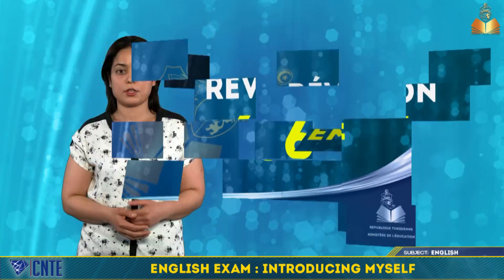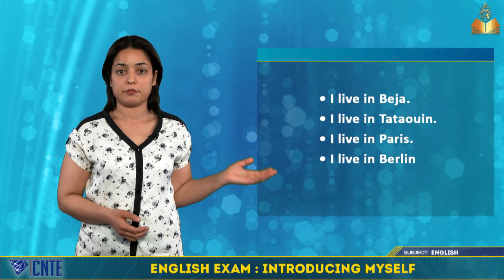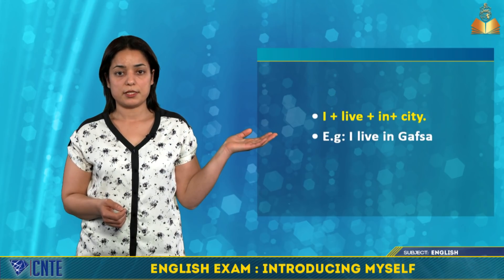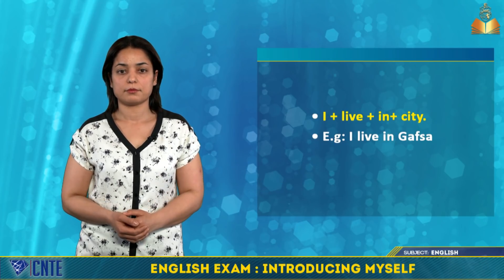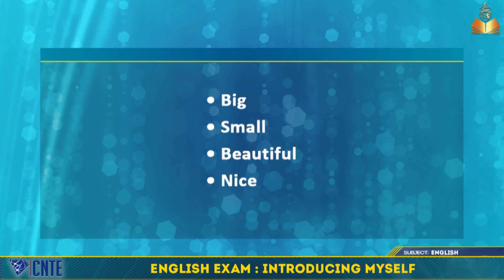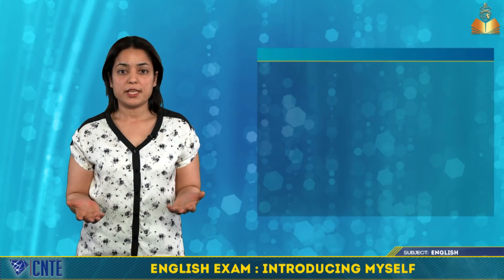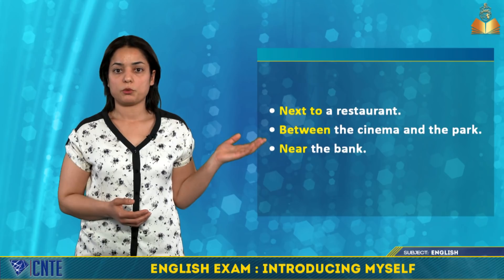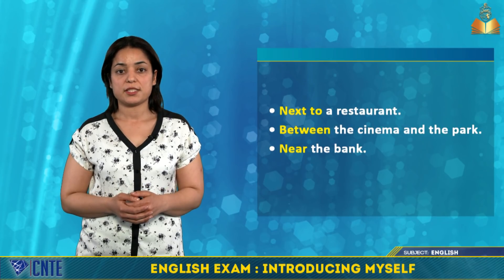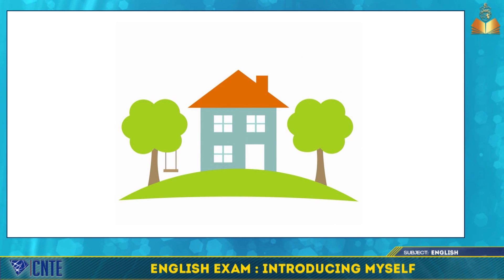You can also say where you live. For example: I live in Beja, I live in Tunis, I live in Paris. The rule is: I + live + in + city. You can describe your house — it can be big, small, beautiful, nice. You can also say where your house is: next to a restaurant, between the cinema and the park, near the bank. In this picture, the window is next to the door, the house is between the two trees, and the tree is near the house.